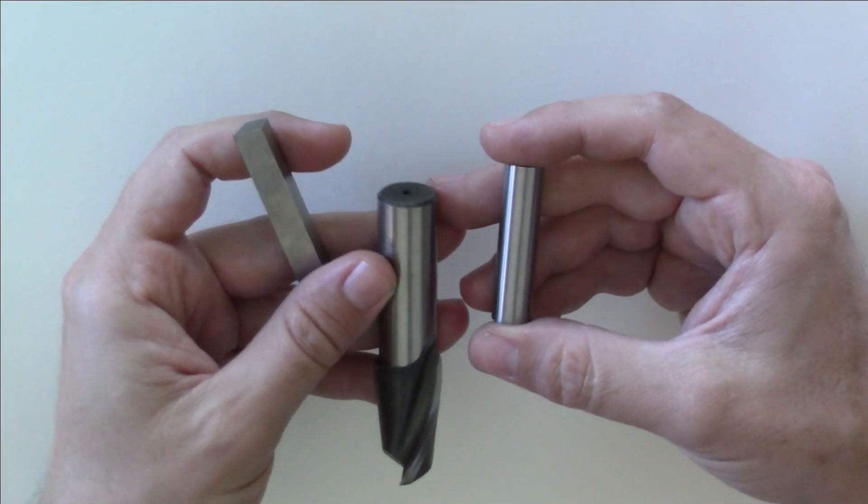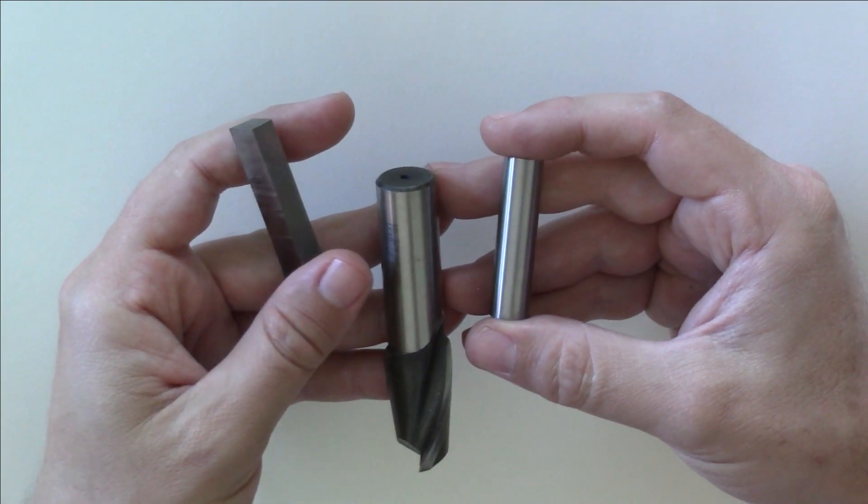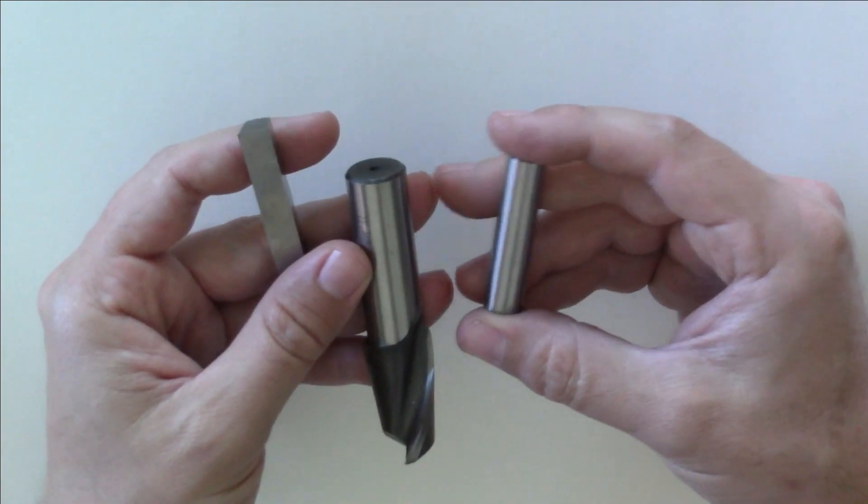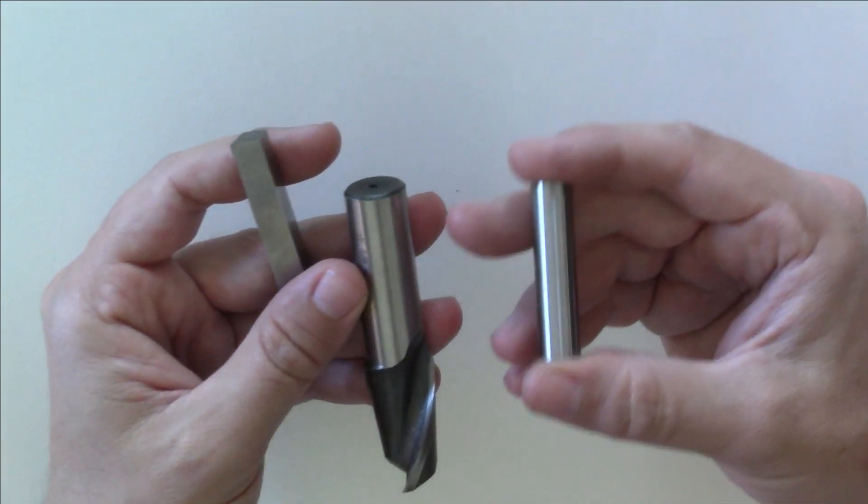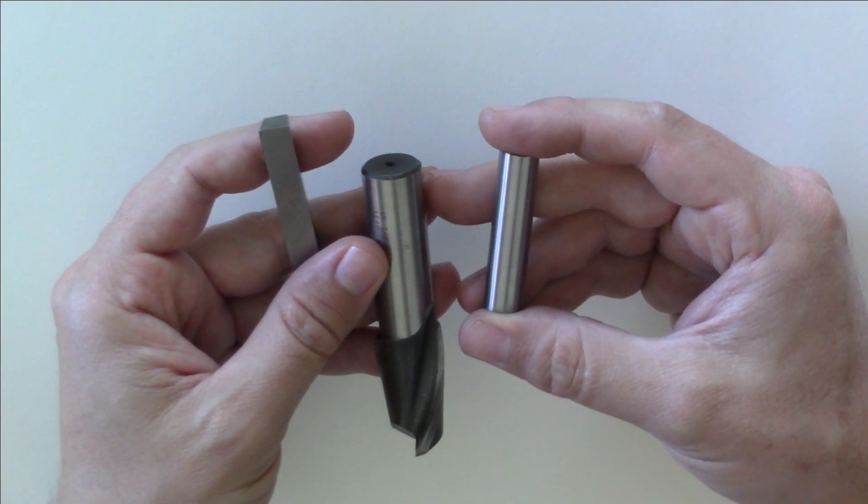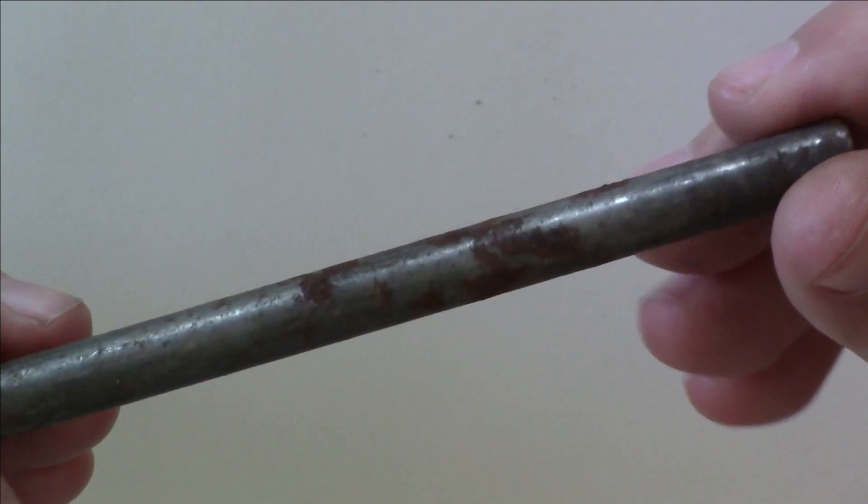If you are going to go this route, try to stick with something with a ground finish like a high speed steel tool bit, end mill shank, or dowel pin. These should at the very least be square and parallel or round, although they could deviate quite a bit from their nominal dimensions. Just avoid anything that is rusty or covered in mill scale.